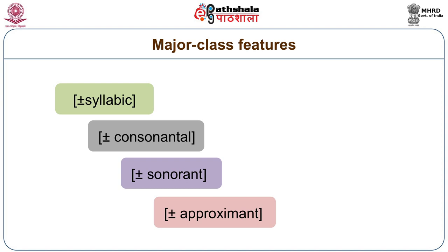Then we have the fourth major class feature called plus/minus approximant — that is, sounds are approximants or sounds are not approximants. Now these are phonetically defined. A plus syllabic sound is one which occupies the nucleus position in a syllable. A plus consonantal sound is one in the production of which there is some obstruction in the oral cavity. A plus sonorant sound is one in the production of which the airflow both inside and outside the mouth is the same. And plus approximant is a sound in the production of which there is no clear obstruction in the passage of air in the oral cavity. So these are phonetically well-defined terms giving us the major classes of sounds.